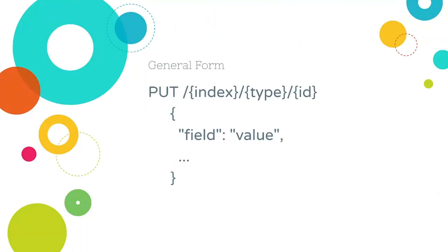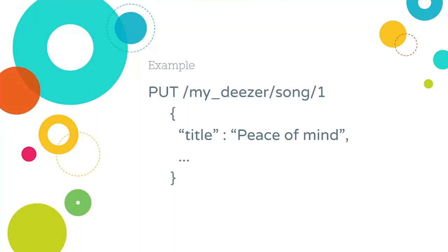We will now learn how to index a document. After this lecture, you will know how to index a document with a custom ID. The general form is: PUT, then the index, the type, and the ID. Remember that index is like a database, type is like a table, and ID is the unique identifier. After that, you put your document as JSON. As an example, my index is 'mydeezer' because I am mimicking Deezer, my type is 'song', my unique identifier is 1, and I have a song document.